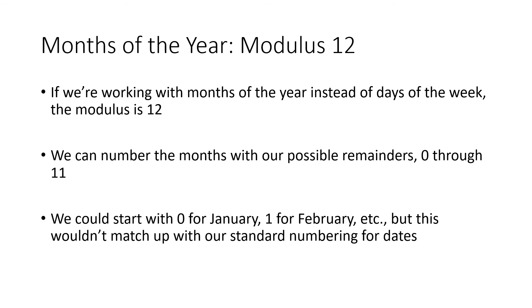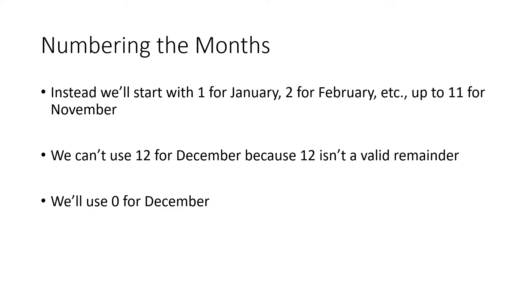Again, we can do the same kinds of thing with modulus 12 where we're talking about months of the year. We can number the months 0 through 11. And again, if you're thinking, why aren't we numbering them 1 through 12? The reason is because 12 can't ever actually be a remainder. So we could start with 0 for January, 1 for February, and so on, but that wouldn't really match up with the normal way that we number the months of the year. Unlike the days of the week, we actually have a numbering system for the months of the year. So we'll keep the numbering as much as we can. We'll start with 1 for January, 2 for February, 3 for March, and so on. That matches up with our normal numbering for the months, all the way up through 11 for November. But then we need to give something the 0. We can't have 12 as a number. Something has to be 0, so let's just use 0 for December.